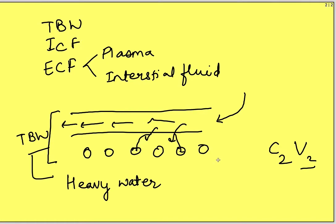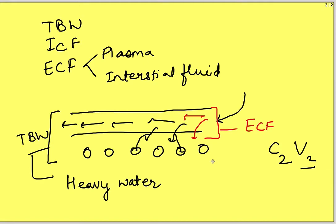If a substance can cross the capillary membrane but cannot enter into the cells, it will remain in two compartments: inside the blood vessel and in the interstitial fluid. In this case we will be able to determine the extracellular fluid compartment. Such substances are ions — radioactive sodium ions and chloride ions can be used to determine the ECF compartment.